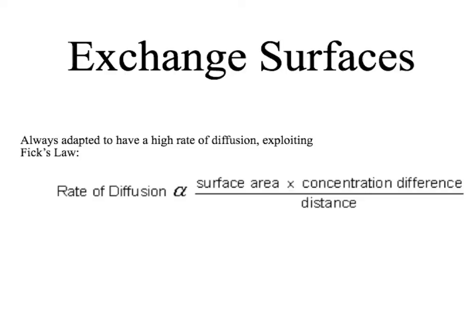You'll see as we go through the examples what I mean. Exchange surfaces tend to have a large surface area, a big difference in concentration, and a small diffusion distance. The really good exchange surfaces that have rapid diffusion will show all three, whereas some exchange surfaces mainly have one or two of these adaptations.